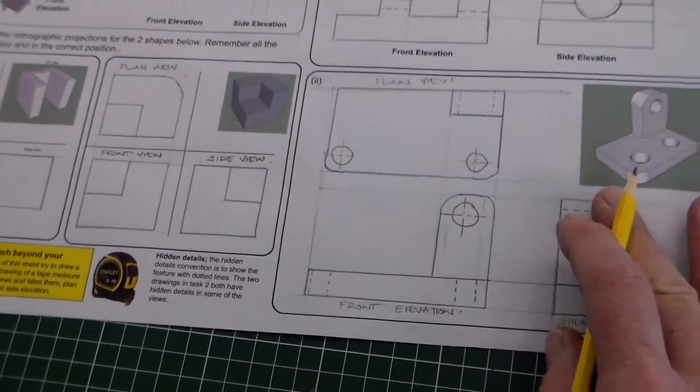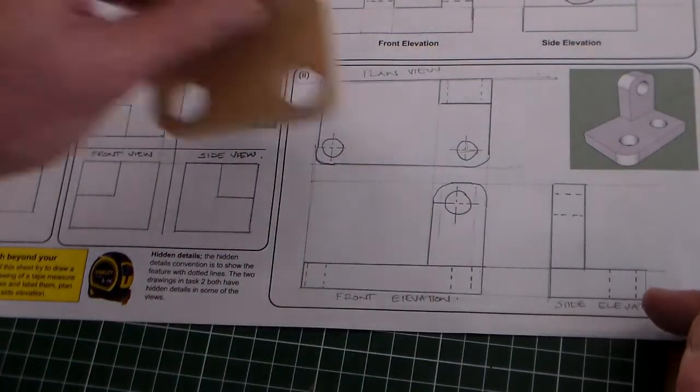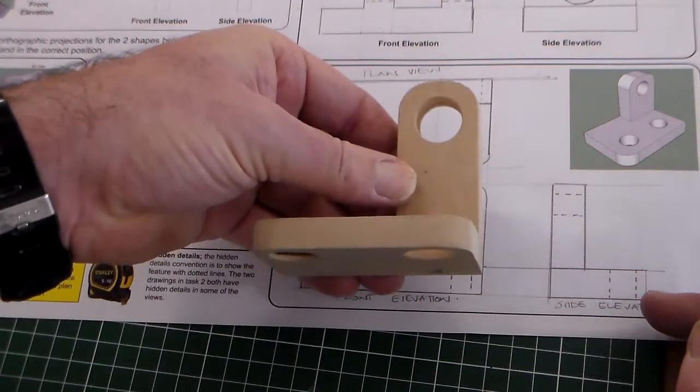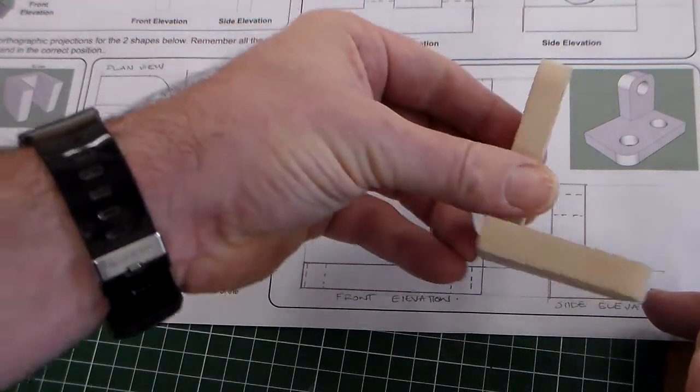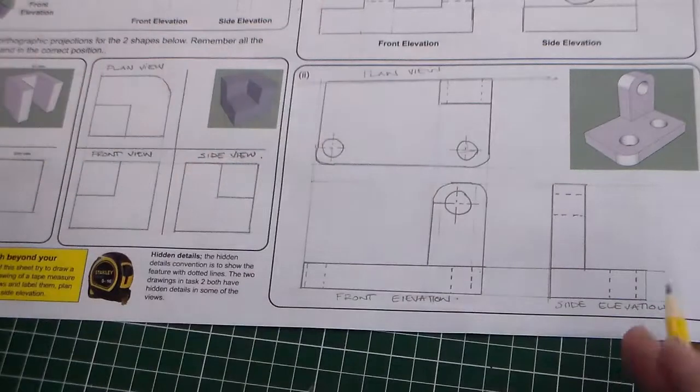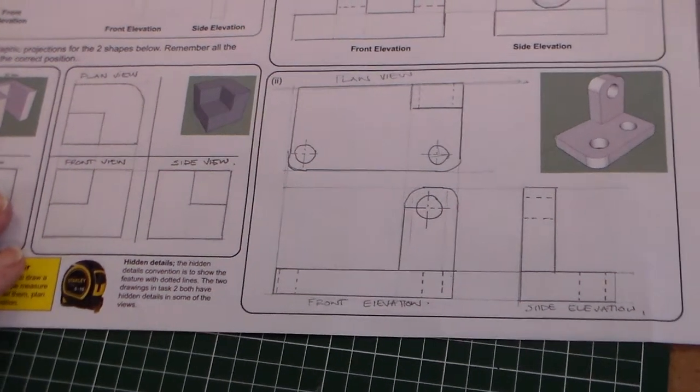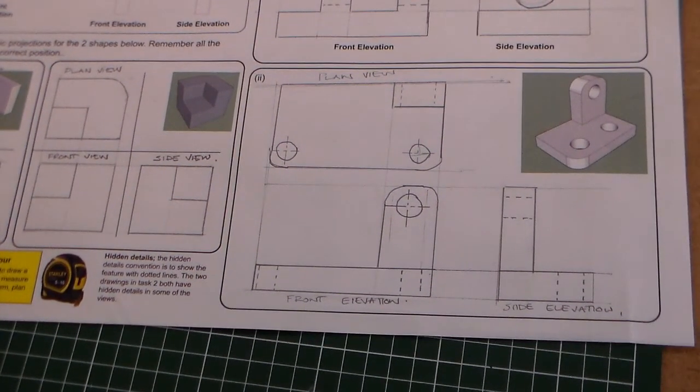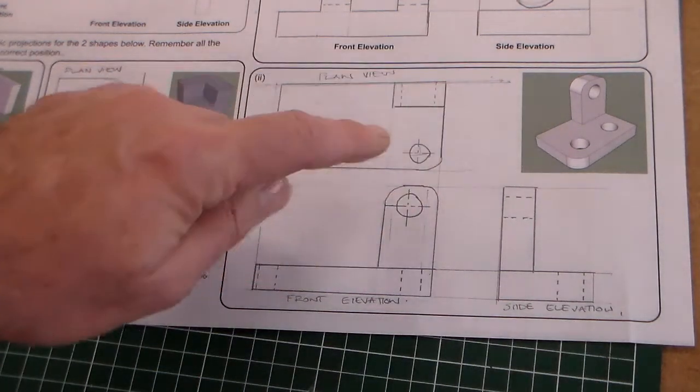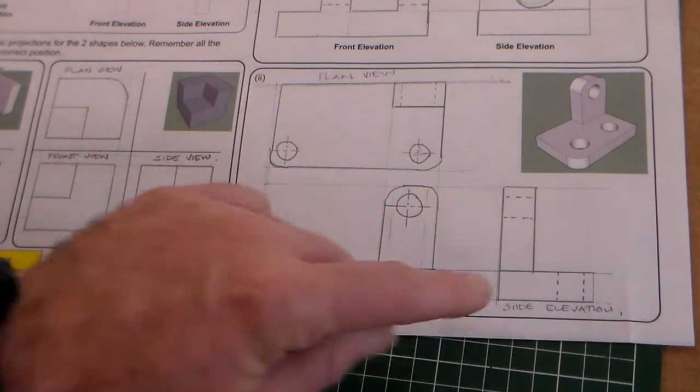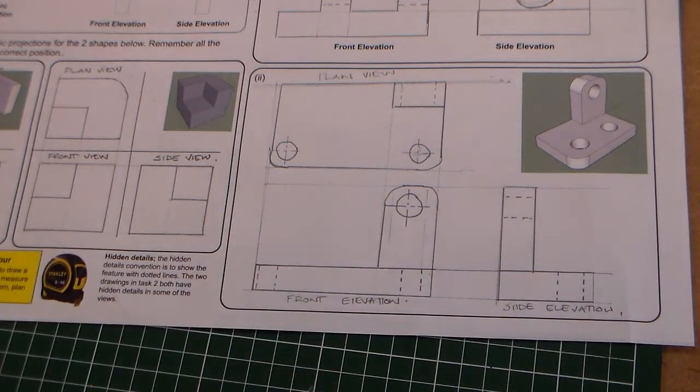And there we have our plan view, our front elevation, and our side elevation. So, there is the last part of task 2, and that is the third angle orthographic projection of the object here with the three views: plan view, front elevation, and side elevation.